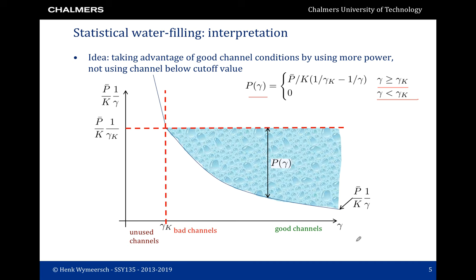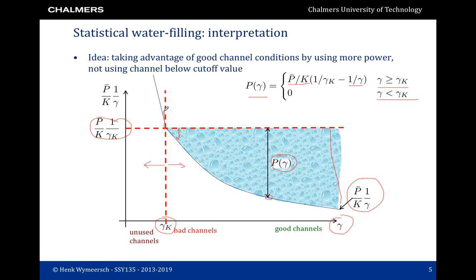The interpretation of water filling is given in the figure. On the x-axis we have the SNR. On the y-axis we show part of the allocated power — p-bar divided by k times 1 over gamma. We also show the cutoff value gamma_k, which determines a so-called water level, this horizontal line. The amount of power allocated is p of gamma, which depends on the difference between the water level and the value determined by the curve. When we have better channels we allocate more power, worse channels less power, and below the cutoff value we allocate no power at all. By changing the cutoff value, we are essentially changing the water level up or down. When the water level goes up, we can allocate more power to channels, which also means a higher average power constraint.